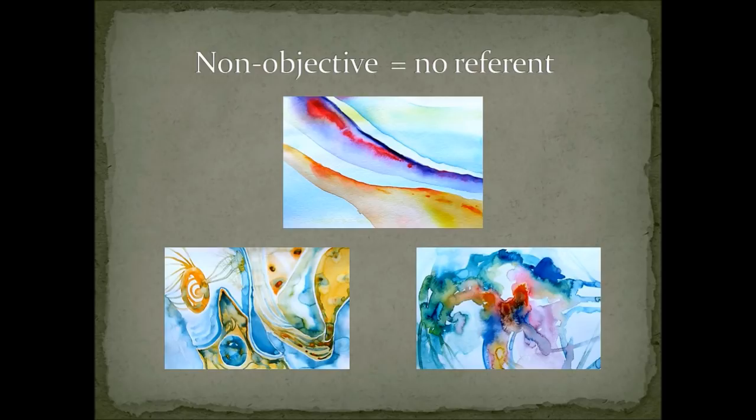Non-objective art gives a lot of freedom to the viewer to create their own interpretation of the artwork. When a viewer asks the artist, 'What is it?' the artist often replies, 'Well, what does it look like to you?' This is a recognition of the subjective nature of non-objective art. In these watercolors, I've had fun working with shapes and colors.